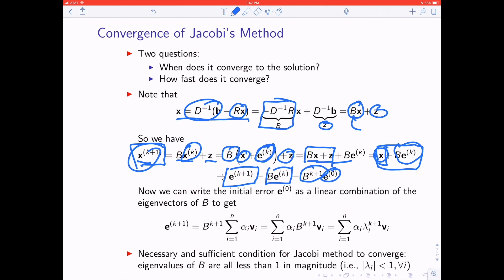We're going to write the initial error E0 as a linear combination of whatever the eigenvectors of this B matrix happen to be. So E k plus 1 is equal to B to the k plus 1 acting on some linear combination of eigenvectors of B. Since these alphas are scalars, we can bring this B matrix inside. Since the V are eigenvectors of B, then B k plus 1 acting on V becomes lambda I k plus 1 times V by the definition of an eigenvector.